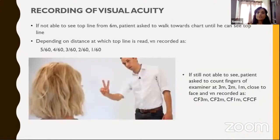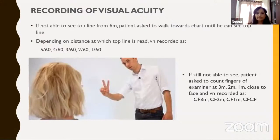What if the patient cannot read the topmost line of the Snellen's chart at six meters? Then ask the patient to walk towards the chart until he can read the top line. Suppose he reads it at five meters, record it as five by 60; if at four meters, four by 60; then three by 60, two by 60, one by 60 — recorded accordingly based on the distance at which he reads the top line.